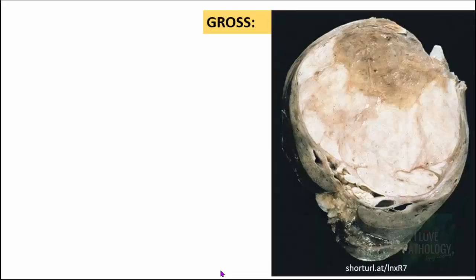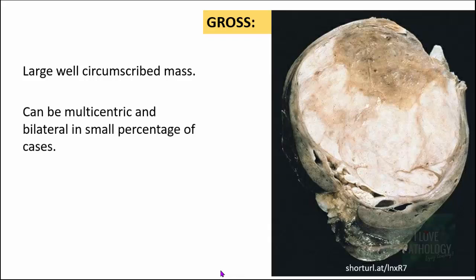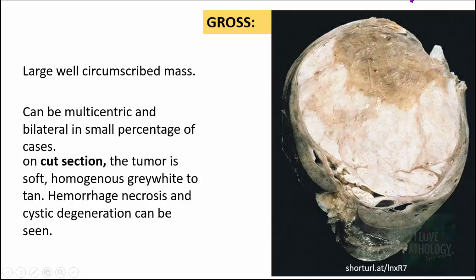Grossly, Wilms tumor differs from renal cell carcinoma. It is a very large, well-circumscribed mass that can be multicentric and bilateral in a small percentage of cases. Often it is a single large mass almost replacing the entire kidney, with only a very thin rim of renal parenchyma remaining. On cut section, the tumor is soft and homogenous, gray-white to gray-tan, with areas of hemorrhage, necrosis, and cystic degeneration.